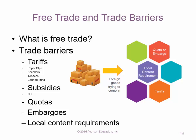Quotas limit how much of a certain product from a certain country can come in to protect the domestic industry — pulling back supply to protect pricing and U.S. production. An embargo is where you don't let anything in from a country — that's usually more of a political issue than an economic one. The classic example of an embargo is Cuba.